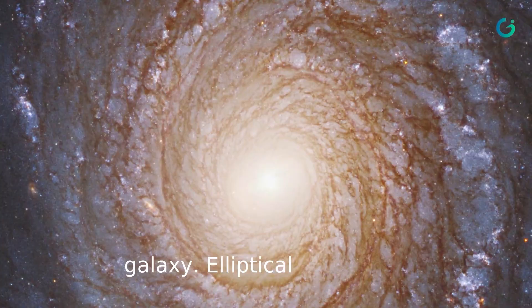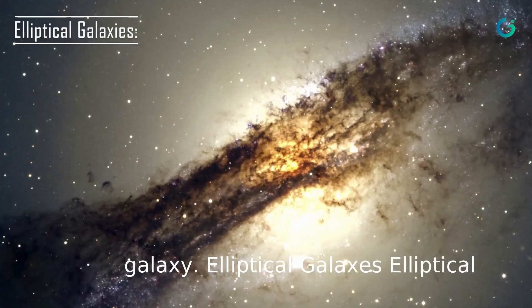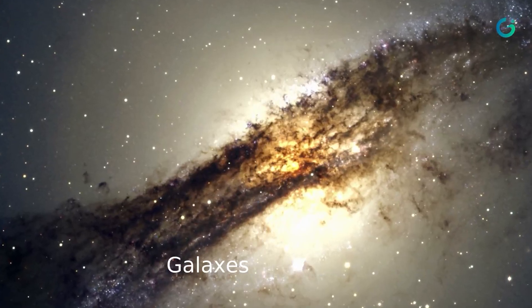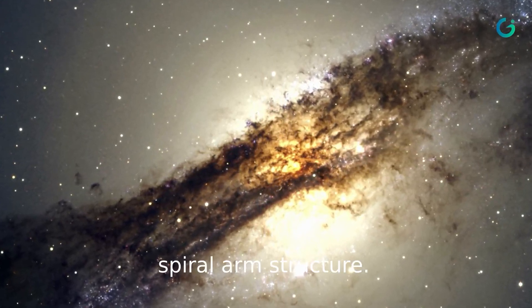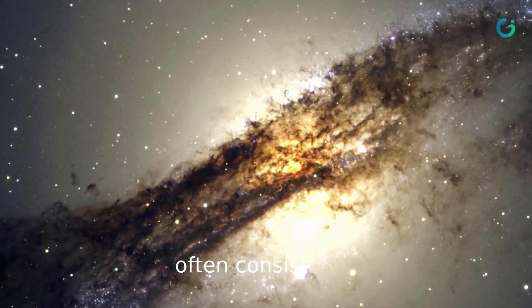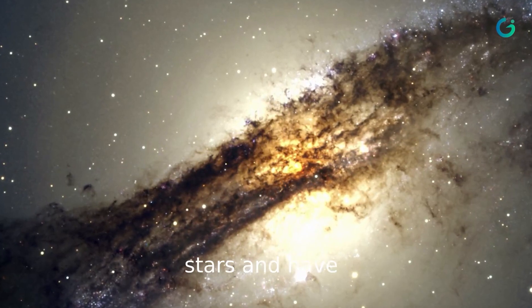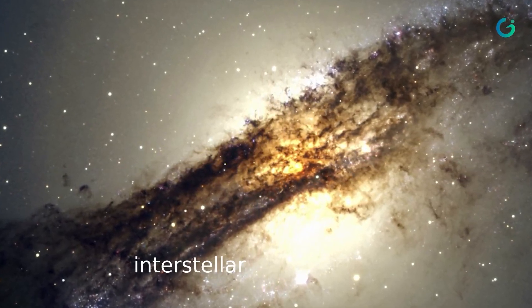Elliptical galaxies are shaped like ellipses and lack the spiral arm structure. They often consist of older stars and have less interstellar gas. Examples include M87 and Centaurus A.